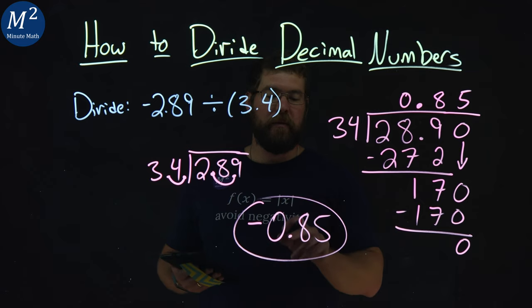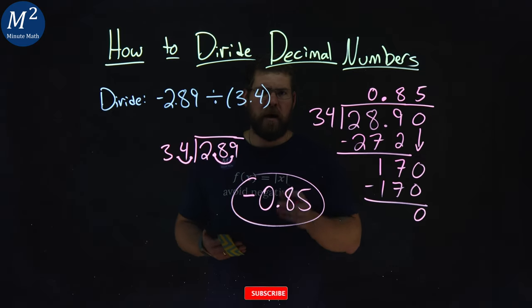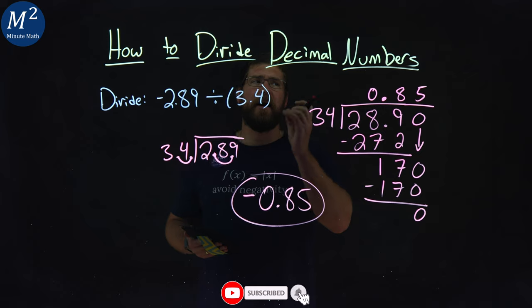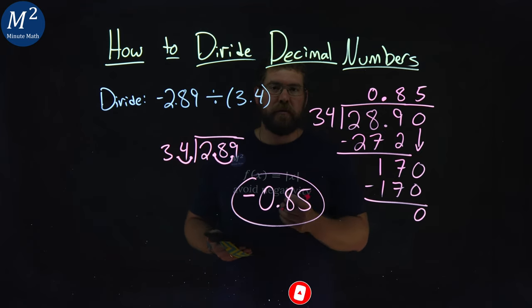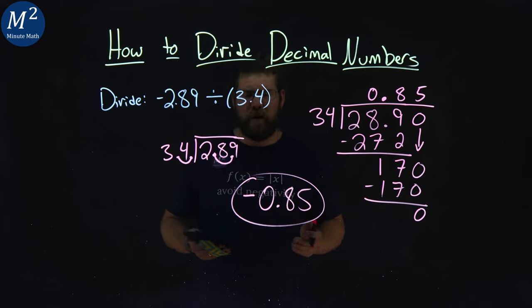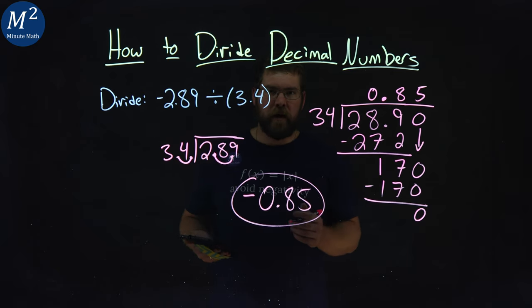Again, negative 0.85. I hope you learned something here on how to divide decimal numbers. If you did, make sure you like this video and subscribe to our YouTube channel. This helps us make more of these free math lessons for you and for everyone else. So as always, thanks for watching.